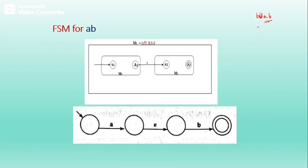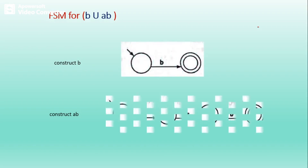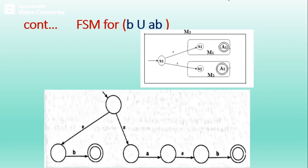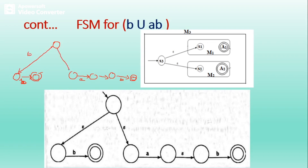Next, we need to handle the union operation to build B union AB. We have one machine for B and one machine for AB. To perform union, take one new start state and join it to the earlier start states of both machines using epsilon transitions. The earlier start states are no longer start states — the new start state replaces them. That is what we have done here for B union AB.